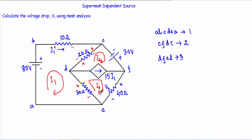In case of this 30 ohm, I1 is entering from this direction in mesh 1, so this terminal should be positive and this terminal should be negative. In case of I3, it will be entering from this direction in the 30 ohm in mesh 3, therefore this terminal should be positive and this terminal should be negative. In case of this 40 ohm, I3 current will be entering from this direction, therefore this terminal will be positive and this terminal will be negative.